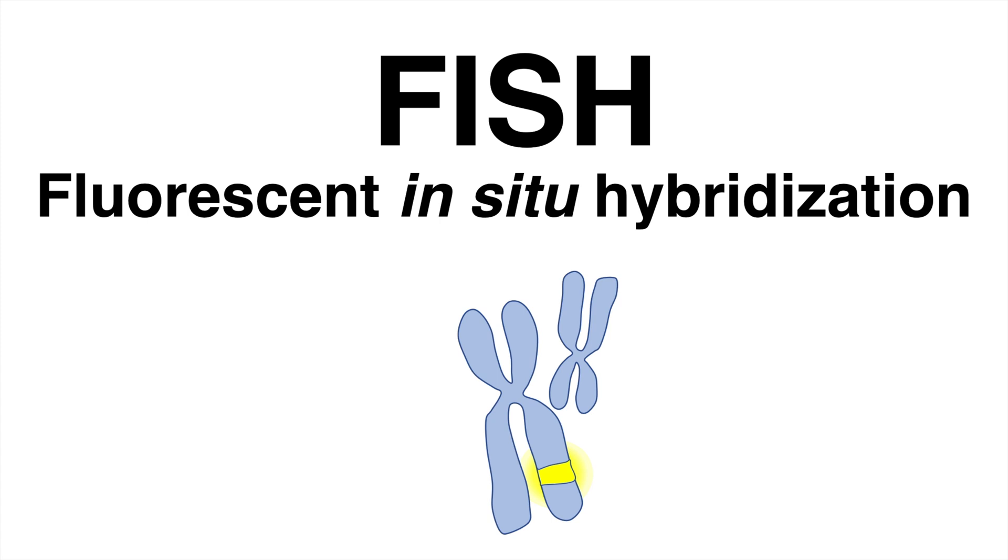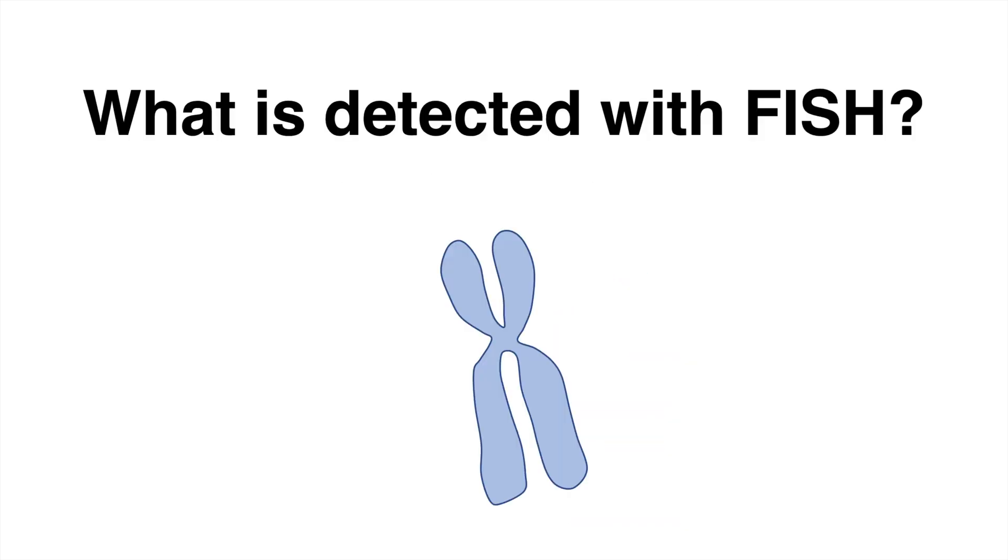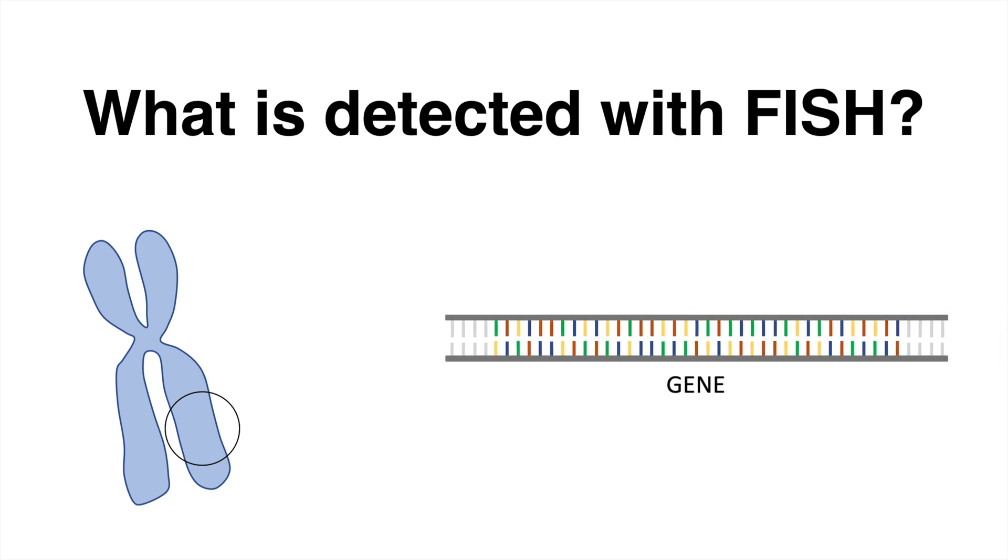The genomic location of specific genes on chromosomes can be detected with FISH. A chromosome is the observable product of condensely packed DNA and proteins. When zooming into chromosomes, one can detect long DNA sequences which make up our genes.